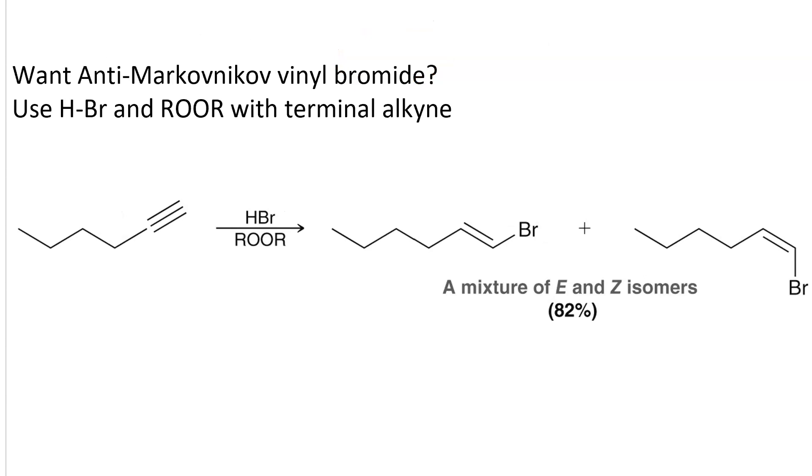An anti-Markovnikov vinyl bromide can be achieved if you take a terminal alkyne, react it with one equivalent of hydrobromic acid and peroxide, but you get a mixture of the E and Z isomers at 82% efficiency. The mechanism is not understood.